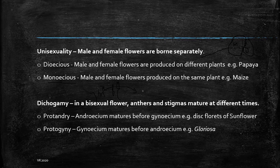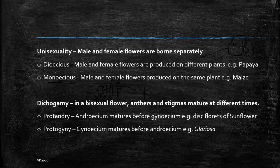Another plant's female can be mature at the same time and cross-pollination can occur. There are two conditions: either the male matures first, known as protandry — where the androecium matures before the gynecium, seen in sunflower — or protogyny, where the female matures before the male, seen in Gloriosa.